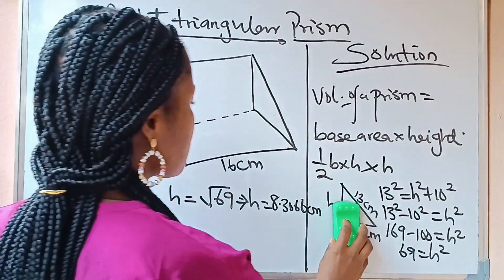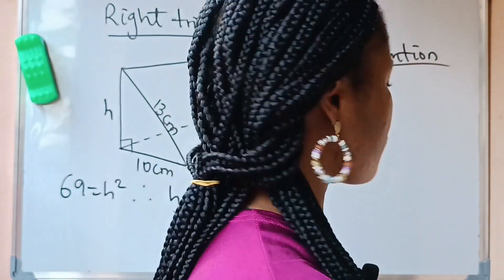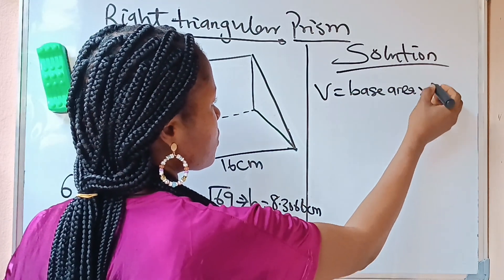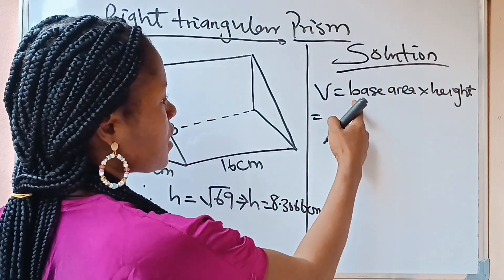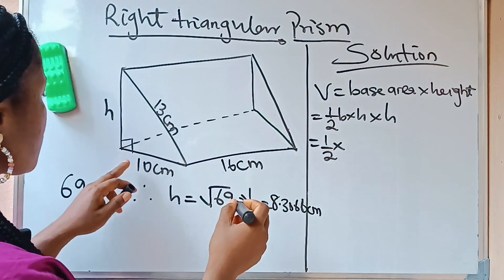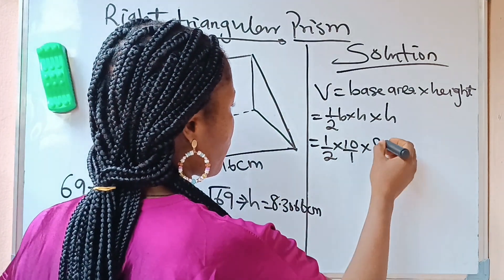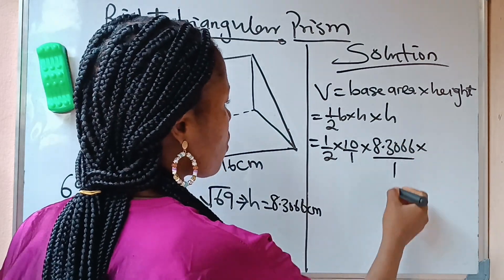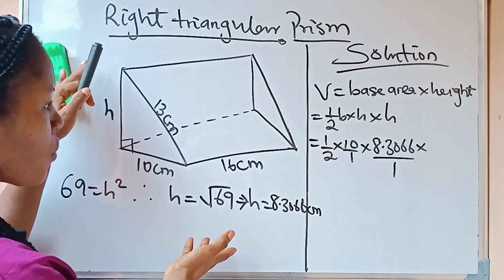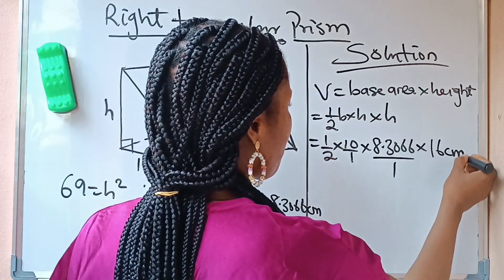Now that we have h, we can find the base area and compute the volume. The volume equals base area times height, and base area equals half times base times height of the triangle. So it is half times 10 times 8.3066, and then multiplied by the height of the prism. Because this is a right triangular prism standing on the right-angled triangle, the height of the prism is 16 cm.